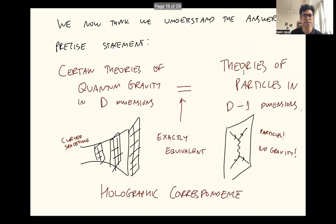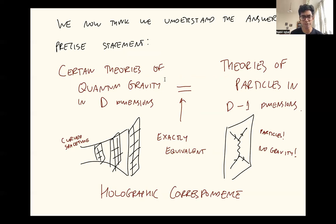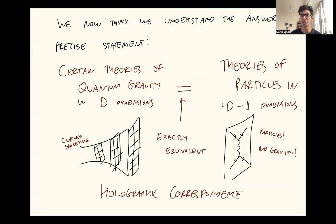Here is the fact. We now believe that the reason why black holes have an entropy that goes like their area is because there's a very precise equivalence between two very different seeming things. It seems that there are certain theories of quantum gravity in d spacetime dimensions that are exactly equivalent to ordinary theories of particles — just particles bouncing around — in one lower number of dimensions, in d-1 dimensions.